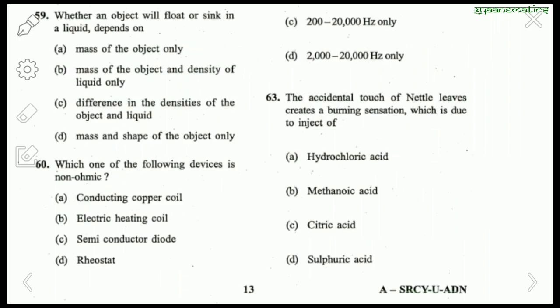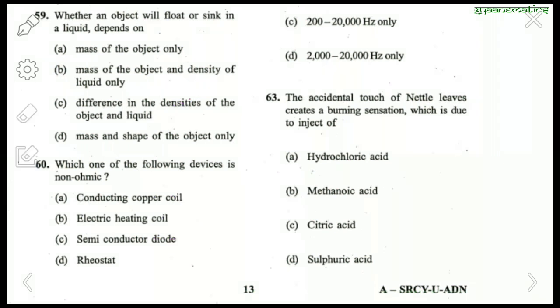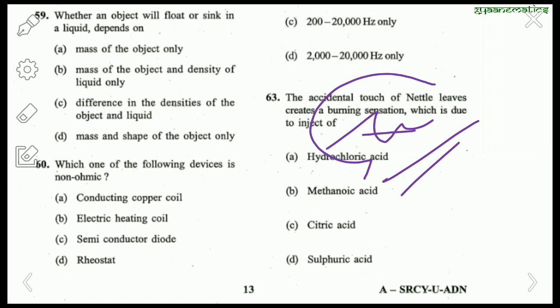Question 59: Whether an object floats or sinks in liquid depends on their density difference. Answer is C. Next: Which device is ohmic? Rheostat, heating coil, and copper coil are ohmic; a semiconductor diode is not ohmic, so the answer is C. Question 63: The accidental touch of nettle leaves creates a burning sensation due to formic acid present in nettle leaves. Formic acid (HCOOH) is also present in red ants.